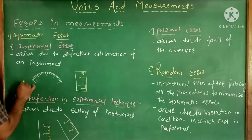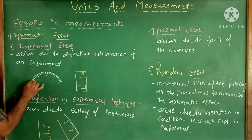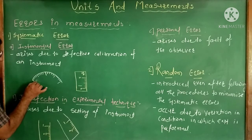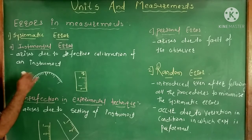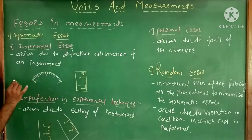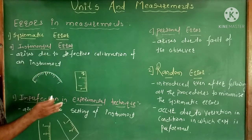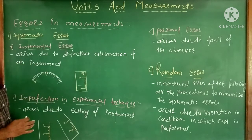Suppose you take a circular scale — here is the first line, second, third, fourth. If the distance between two lines is not proper, meaning the distance is different for different divisions, then the error which arises due to that is also called instrumental error.